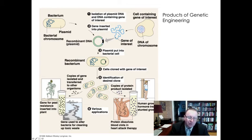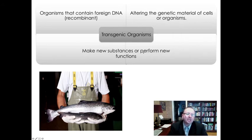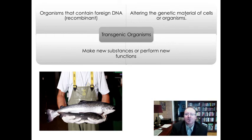Now the next step in genetic engineering — what we can make — are things called transgenic organisms, and this is our final concept on screencast one. Transgenic organisms are mature organisms that contain foreign DNA — recombinant DNA, so DNA from another species. This alters the genetic material of the cells of the organism and allows them to either make new substances they would not normally make, or to perform new functions they would not ordinarily be able to perform.